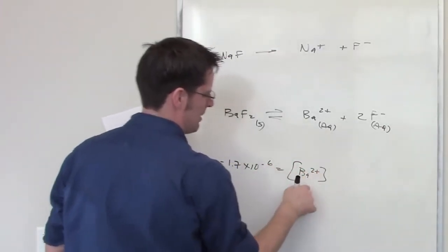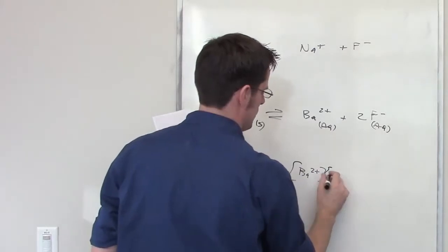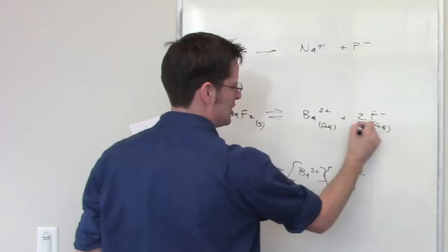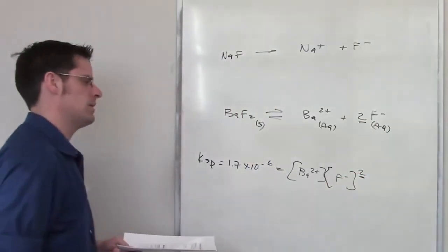the equilibrium concentration of barium 2 plus, multiplied by the equilibrium concentration of fluoride minus squared. Because there's a 2 there, it becomes an exponent right there.